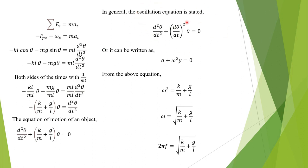In general, the oscillation equation is d²theta/dt² plus omega squared theta equals zero, or it can be written as theta-double-dot plus omega squared theta equals zero.